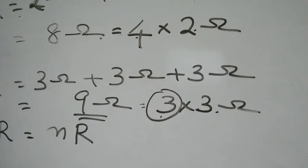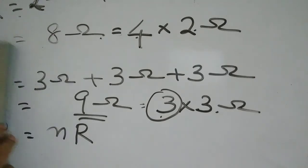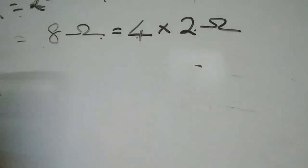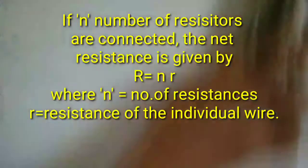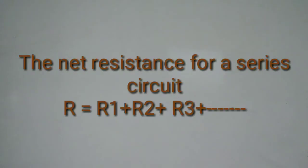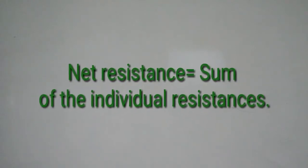This is how we can find the resultant resistance in the case of a series circuit. The net resistance for a series circuit is R = R1 + R2 + R3 + ... depending upon the number of resistors. That is, net resistance is equal to the sum of the individual resistances.